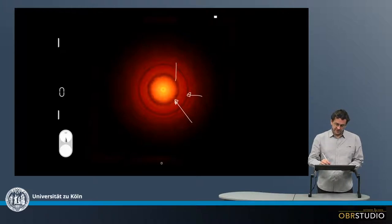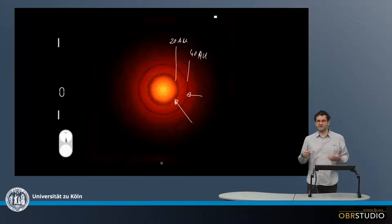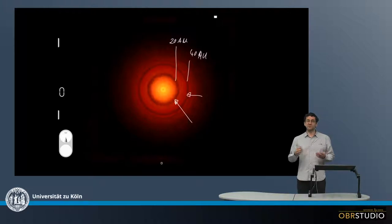And not only this, but these gaps here are about 20 AU away from the Sun, and this gap here is about 40 AU away from the Sun. So this is something like Saturn and Uranus. These are very familiar distances of planets from the Sun.